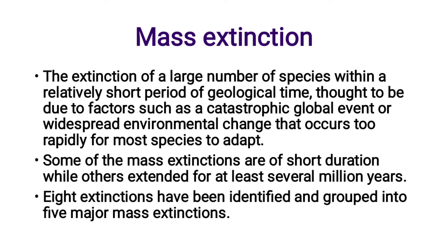The last type is mass extinction. The extinction of a large number of species within a relatively short period of geological time, thought to be due to factors such as catastrophic global events or widespread environmental change that occurs too rapidly for most species to adapt. Some mass extinctions are of short duration, while others are extended for at least several million years.